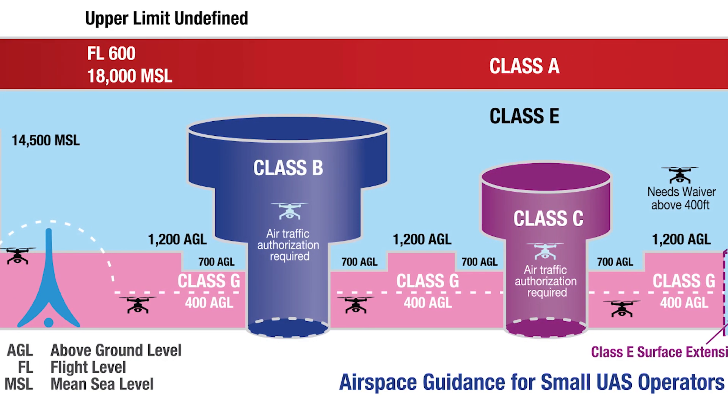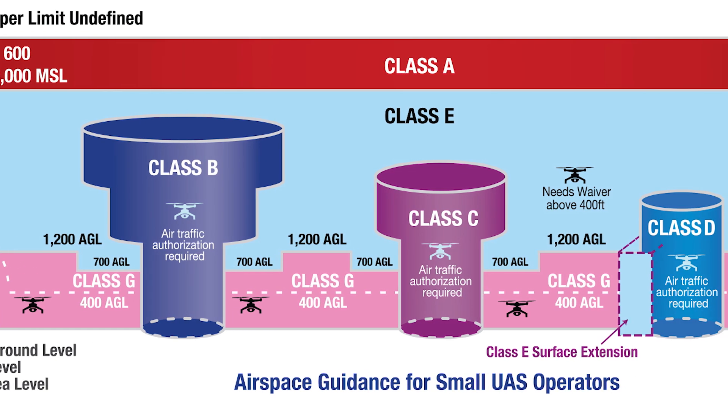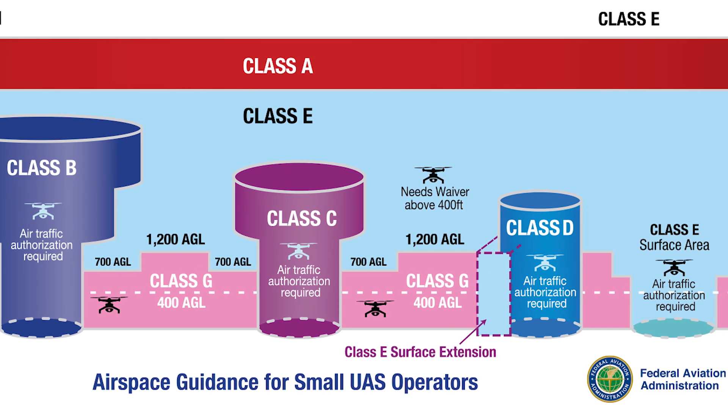This diagram, created by the FAA, can be found on their website pages that deal with UAS operations. It was intended to simplify a complex idea, but many just find it confusing — even after years of familiarity with drone operations. But perhaps that issue arises from trying to depict in two dimensions something that is very much a three-dimensional concept. So let's see if we can break this down better using visualizations.